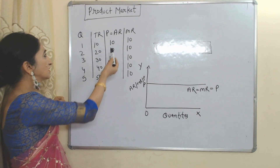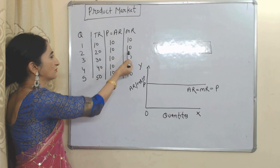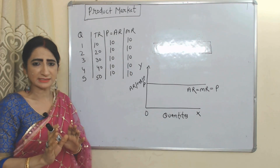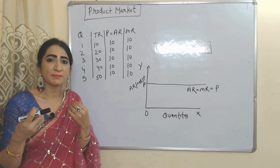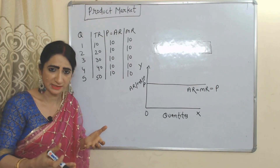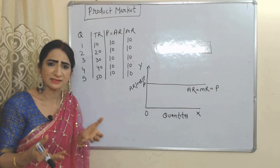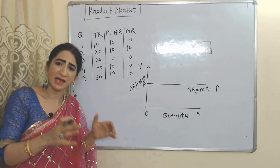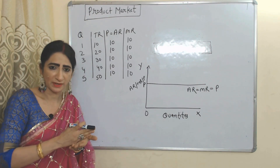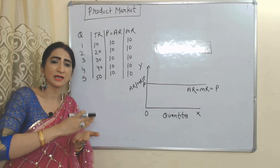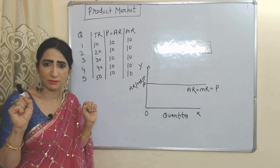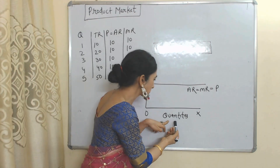Here you can see total revenue and marginal revenue are both equal to each other. So we can say that in case of perfect competition, firms cannot influence prices — they are just price takers. That's why in case of perfect competition, price, average revenue, and marginal revenue are all equal to each other.